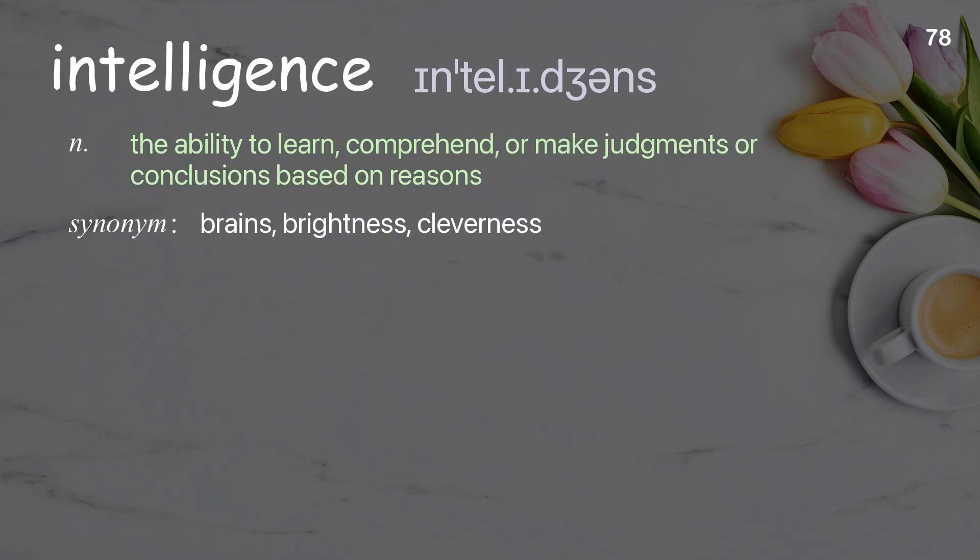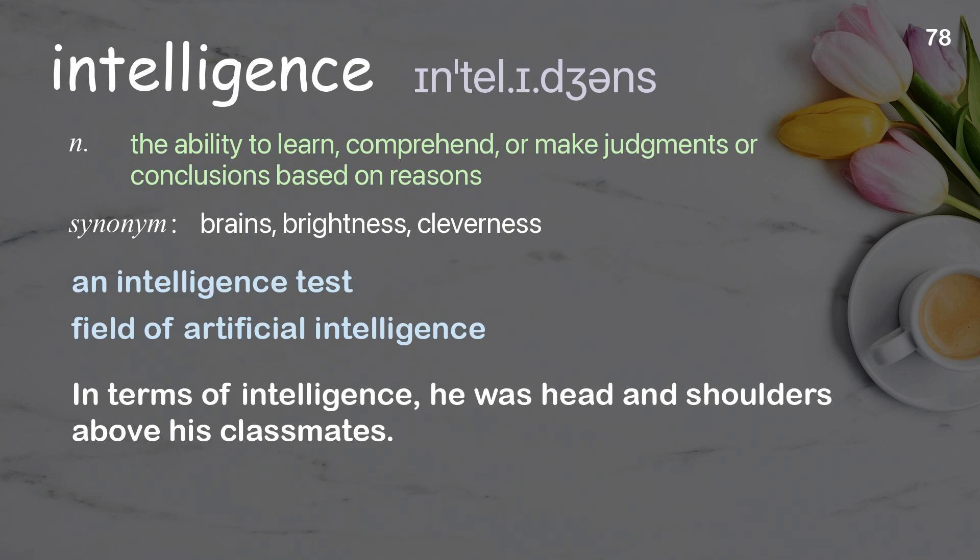Intelligence: The ability to learn, comprehend, or make judgments or conclusions based on reasons. Examples: An intelligence test. Field of artificial intelligence. In terms of intelligence, he was head and shoulders above his classmates.